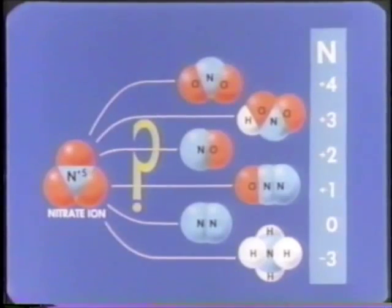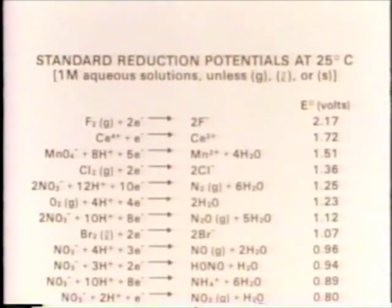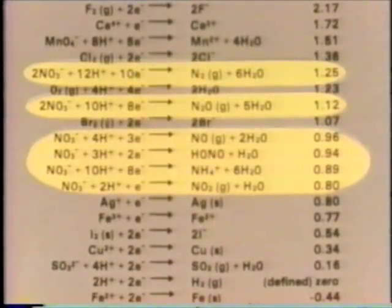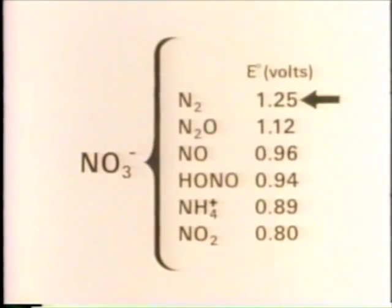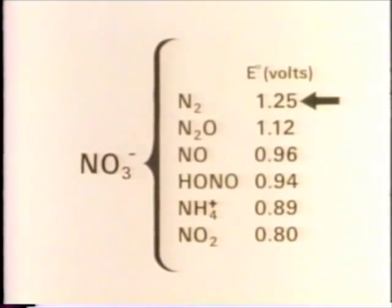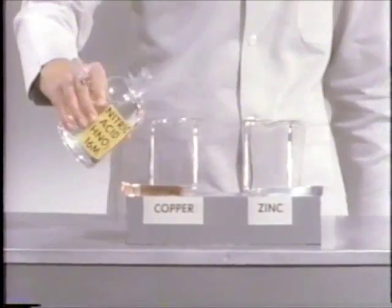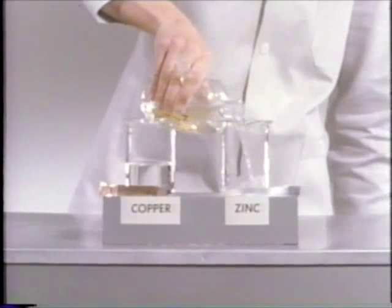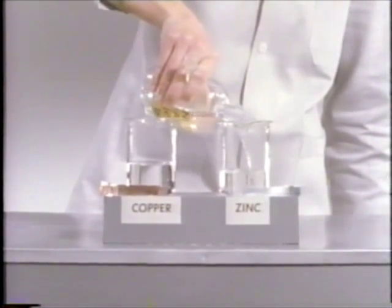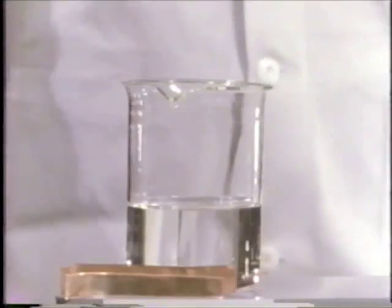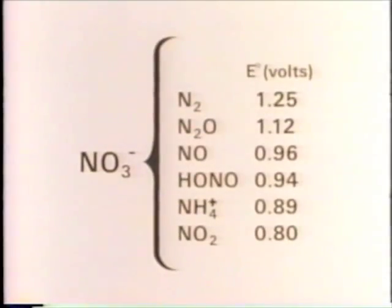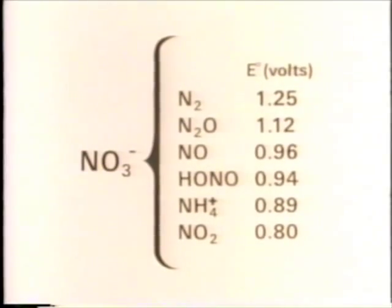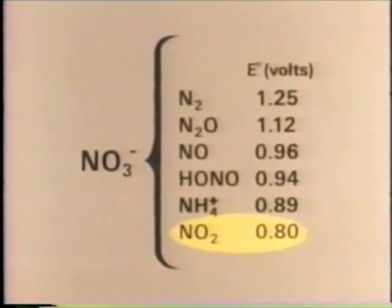How do we predict which reaction will predominate and which products will result? Perhaps E0 values give us a clue. The reduction to nitrogen gas has the greatest energy potential — the largest E0. Therefore, we might expect N2 gas to predominate as a product. Even in concentrated nitric acid solutions, comparing E0 values can be informative, because the relative potentials do not vary much with concentration. If we add the reducing agent copper to nitric acid, we might expect to get colorless nitrogen gas. Actually, we get brown NO2 gas, yet this reaction has the least positive reduction potential, or E0 value.